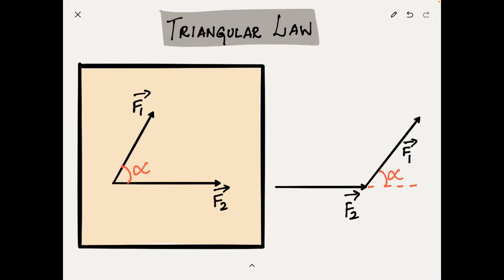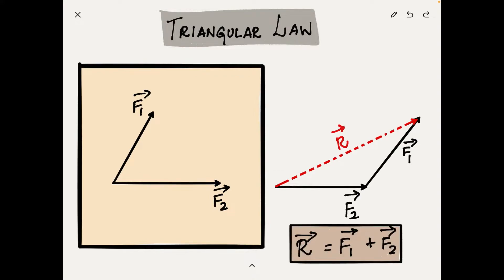Once we have rearranged our forces like this, all we need to do is draw a vector to complete the triangle, and this vector is our resultant force. Mathematically, the resultant vector is a vector sum of all the forces acting on a body. Since force is a vector quantity, we can apply vector addition to calculate the resultant force, and therefore our resultant vector is equal to the vector sum of F1 and F2. Now we know how the resultant force looks, but we still need to calculate its magnitude and direction — for that, we need to do some math.